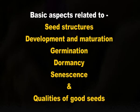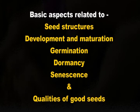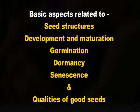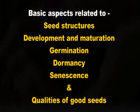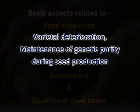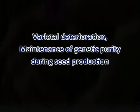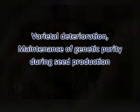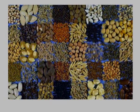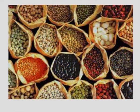Dear students, in the previous three classes of the course Principles of Seed Technology, the basic aspects related to seed structures, development and maturation, germination, dormancy, seed senescence and qualities of good seeds were dealt with. In this session, we shall learn about varietal deterioration and its causes, and also how to maintain the genetic purity during seed production.